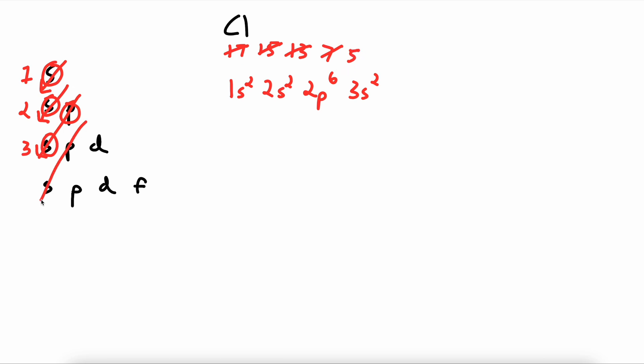We continue reading the chart diagonally, and we've hit a P in our third energy level. So we write 3, P, and we raise it to the fifth power because 5 electrons is all that we have left. This right here, 1s2, 2s2, 2p6, 3s2, 3p5 is the electron configuration for chlorine.